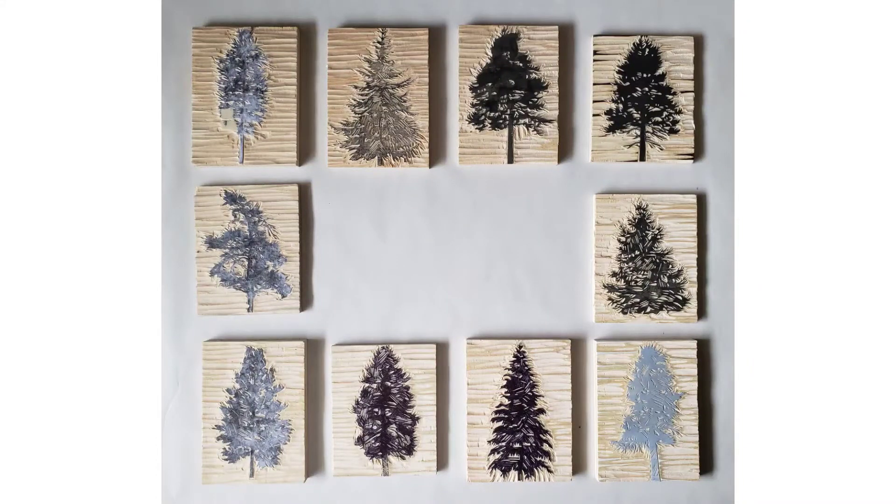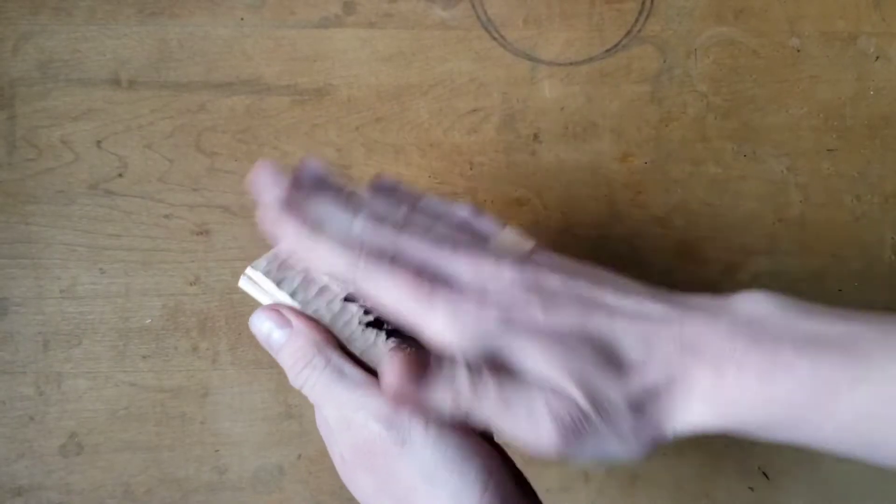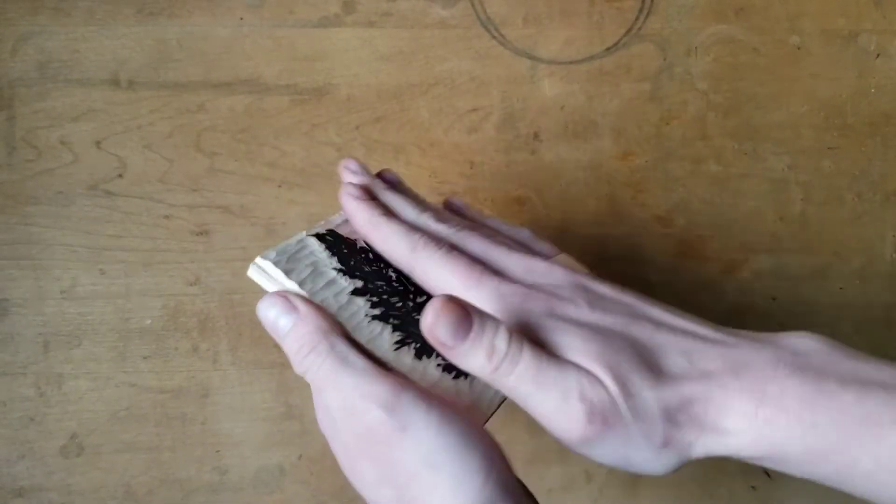This demo will cover printing a woodcut using a western style roll-up. Before inking, gently dust the surface of your plate to remove any sawdust or debris generated from the carving.